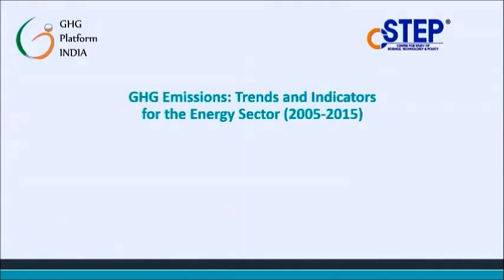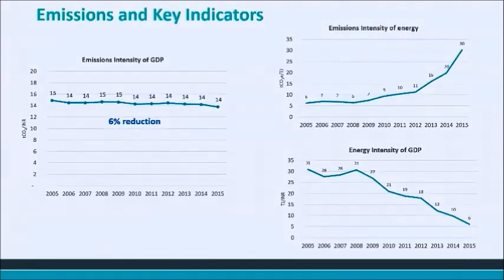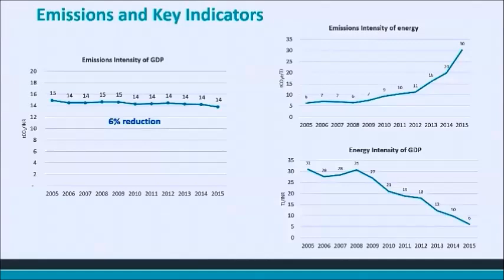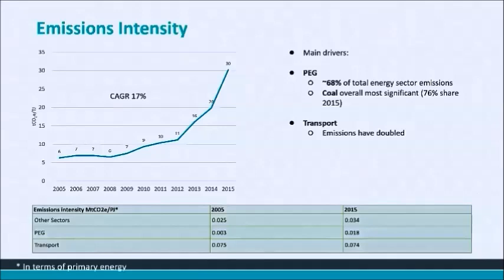Now let's look at key indicators for India's emissions sector-wise, starting with the energy sector. The energy sector's emissions intensity of GDP has reduced by nearly 6% over the past decade. Our energy intensity of GDP has also gone down significantly, while our emissions intensity of energy has increased. This increase in emissions intensity of energy has been compensated by the reduction in energy intensity of GDP, leading to an overall reduction. Looking at emissions intensity of energy for the energy sector, we've been growing at a CAGR of about 17% over 2005-2015. The main drivers are transport and public electricity generation, abbreviated as PEG. In the PEG subsector, coal has always been the most significant fuel, taking a 76% share in 2015.